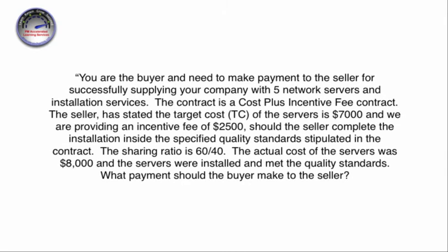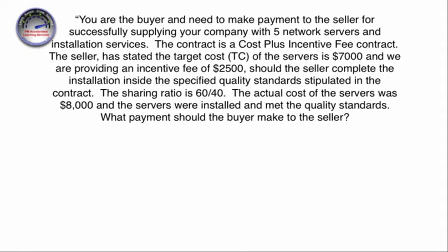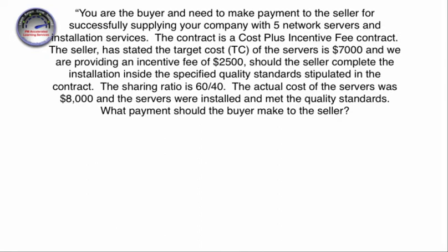Let's go ahead and read the question. You are the buyer and need to make payment to the seller for successfully supplying your company with five network servers and installation services. The contract is a cost plus incentive fee contract. The seller has stated the target cost (TC) of the service is $7,000 and we are providing an incentive fee of $2,500. Should the seller complete the installation inside the specified quality standards stipulated in the contract, the sharing ratio is 60-40. The actual cost of the service was $8,000 and the servers were installed and met the quality standards. What payment should the buyer make to the seller?